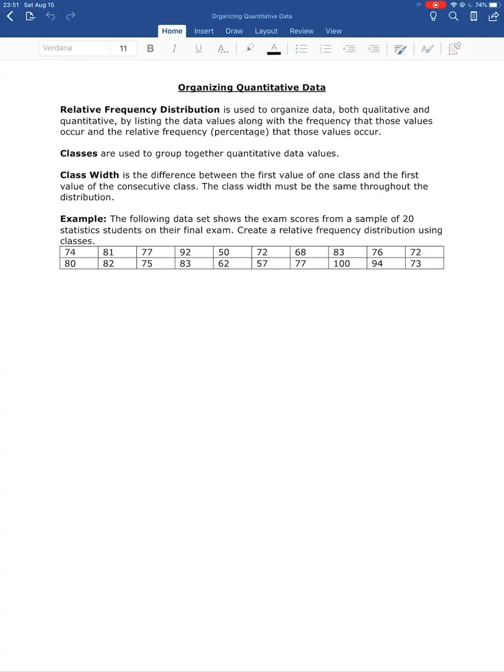Each class has a class width, which is the difference between the first value of one class and the first value of the consecutive class. The class width must be the same throughout the entire distribution, and we'll see this when we actually get into this.